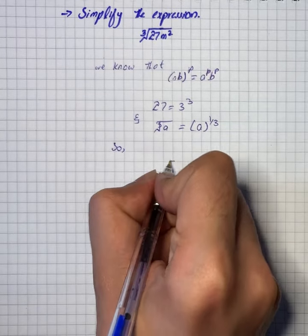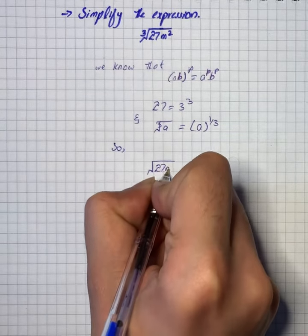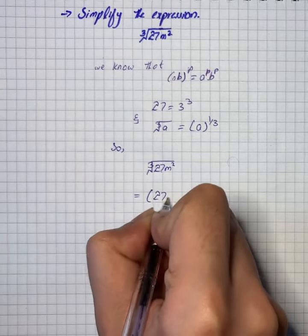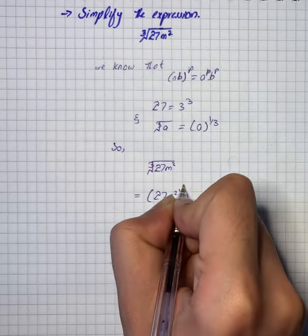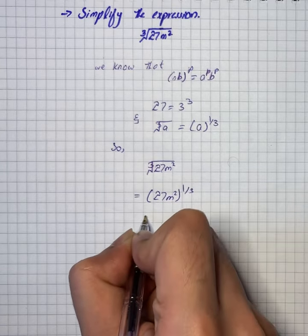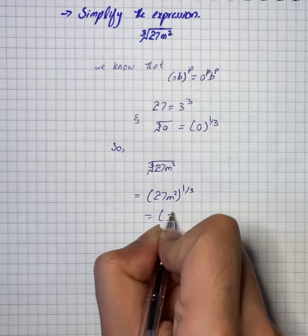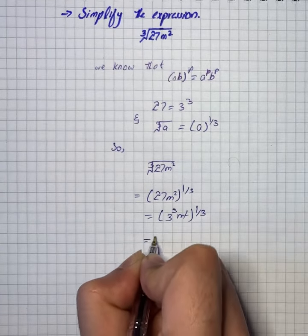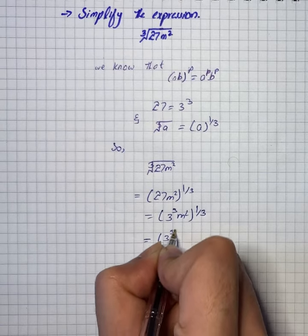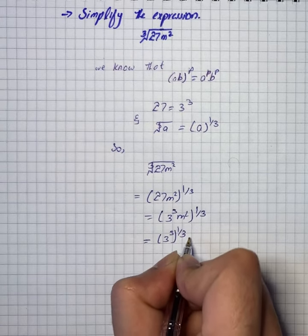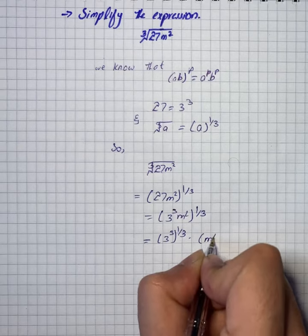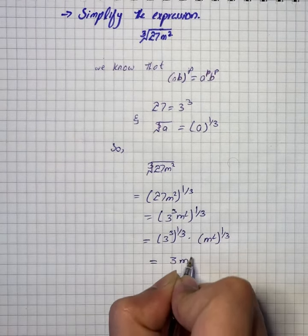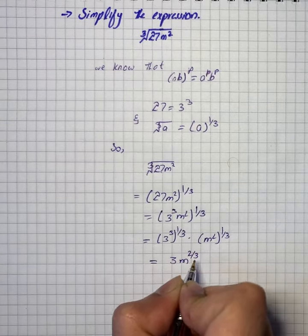So it becomes: under root 27 m square, root power 3, that is equal to (27 m square) whole power 1 by 3, then (3 raised power 3 times m square) whole raised power 1 by 3, which equals 3 raised power 3 whole power 1 by 3, into m square whole raised power 1 by 3. So the simplified expression is 3m whole power 2 by 3.